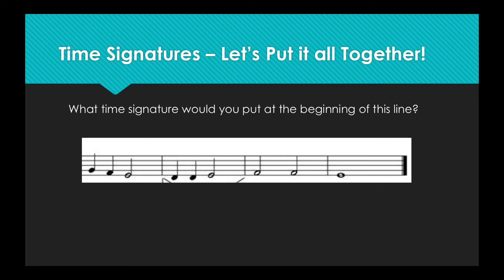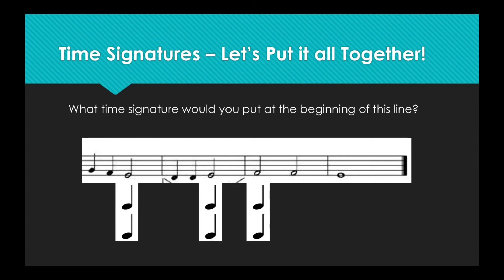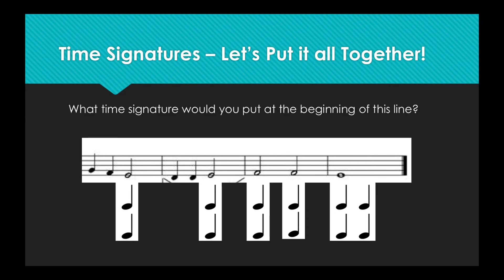Now let's put it all together. It looks like the time signature is missing from this line of music — let's figure out what it is. Looking at the different types of notes in this line, I see quarter notes, half notes, and whole notes. Half notes are easily split into two quarter notes, and a whole note easily divides into four quarter notes. Everything seems to easily divide into quarter notes, which means that the quarter note measures the beat. So 4 is the bottom of our time signature.